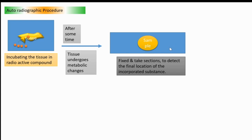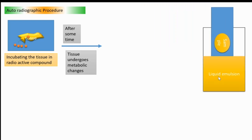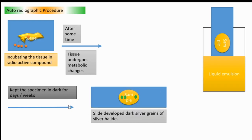For that, we next need to dip this sample inside the liquid emulsion. Liquid emulsion, we know, is a mixture of gelatin and silver halide, and is kept in dark according to how long it is required to get sufficient exposure. And because of sufficient exposure, the specimen developed dark silver grains of silver halide. This demarcation happened in the sample.